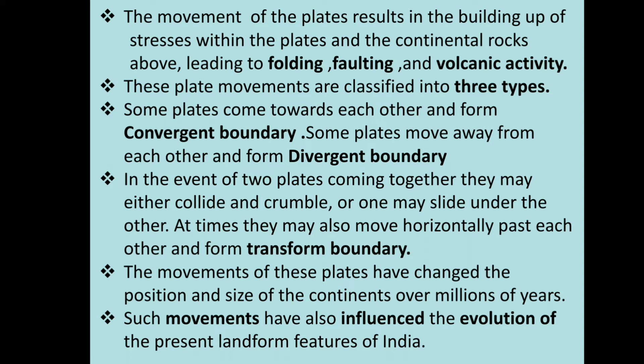These plate movements are classified into three types. Some plates come towards each other and form a convergent boundary. Some plates move away from each other and form a divergent boundary. In the event of two plates coming together, they may either collide and crumple, or one may slide under the other. At times, they may also move horizontally past each other and form a transform boundary. The movements of these plates have changed the position and size of the continents over millions of years.